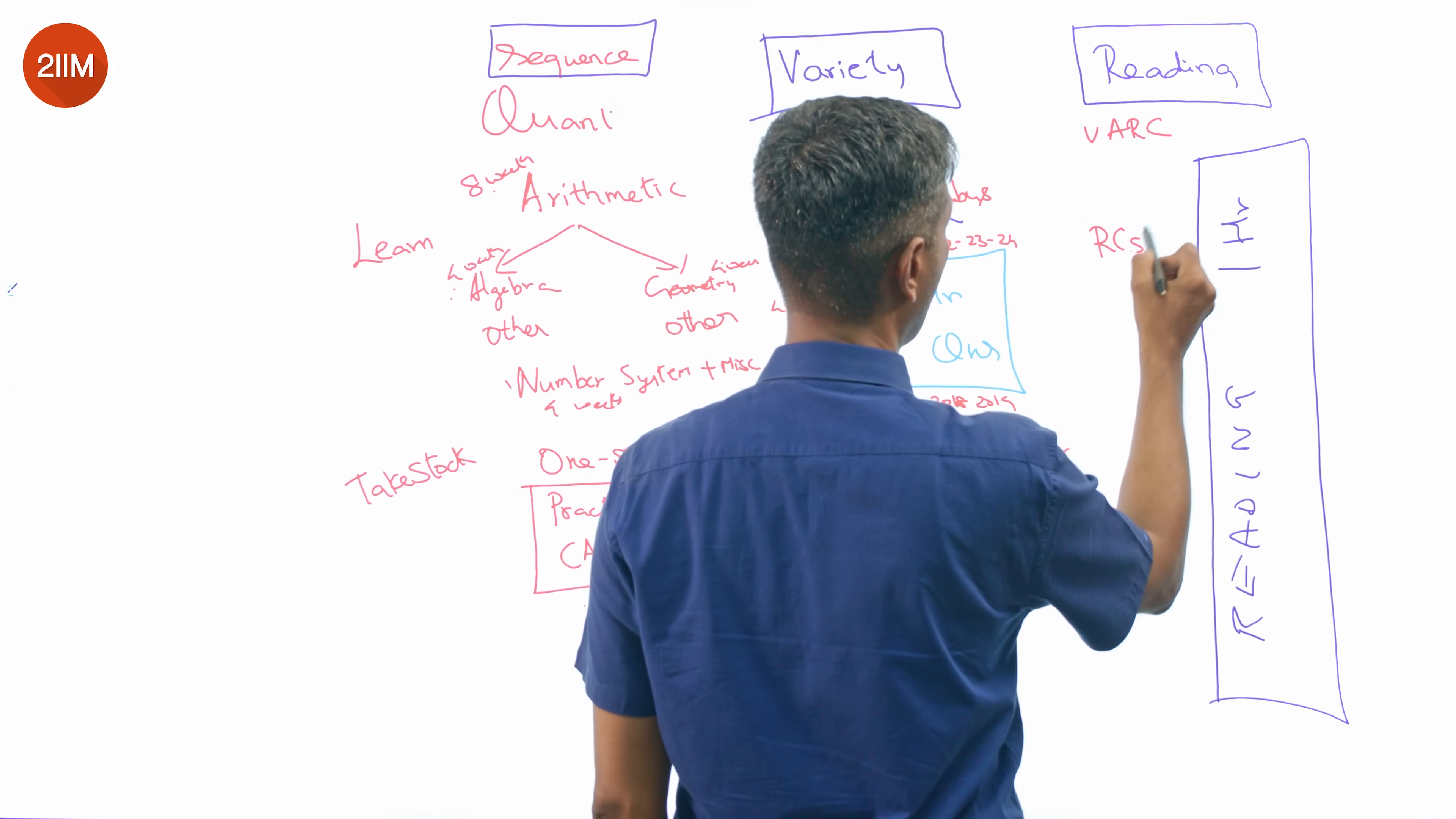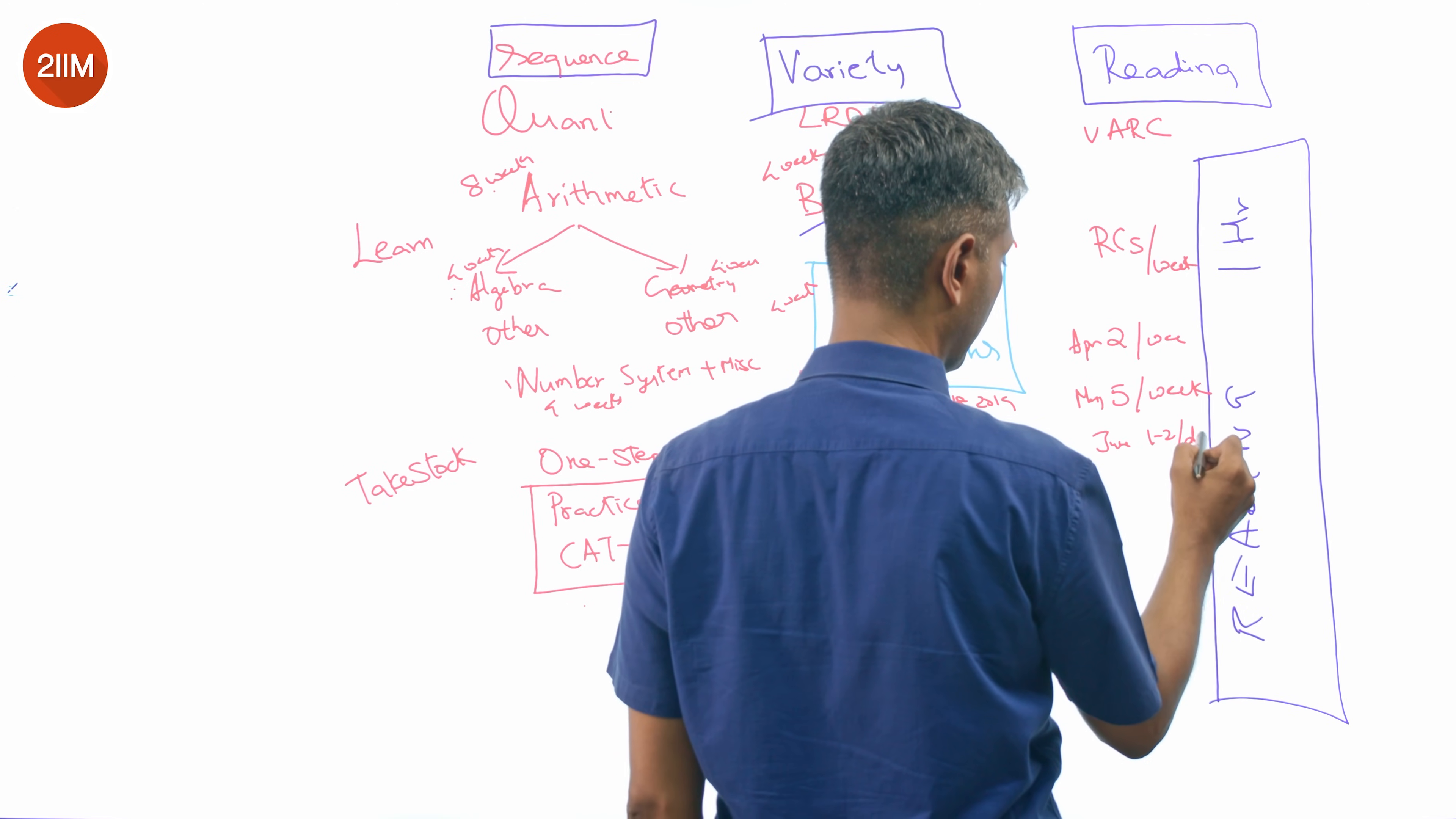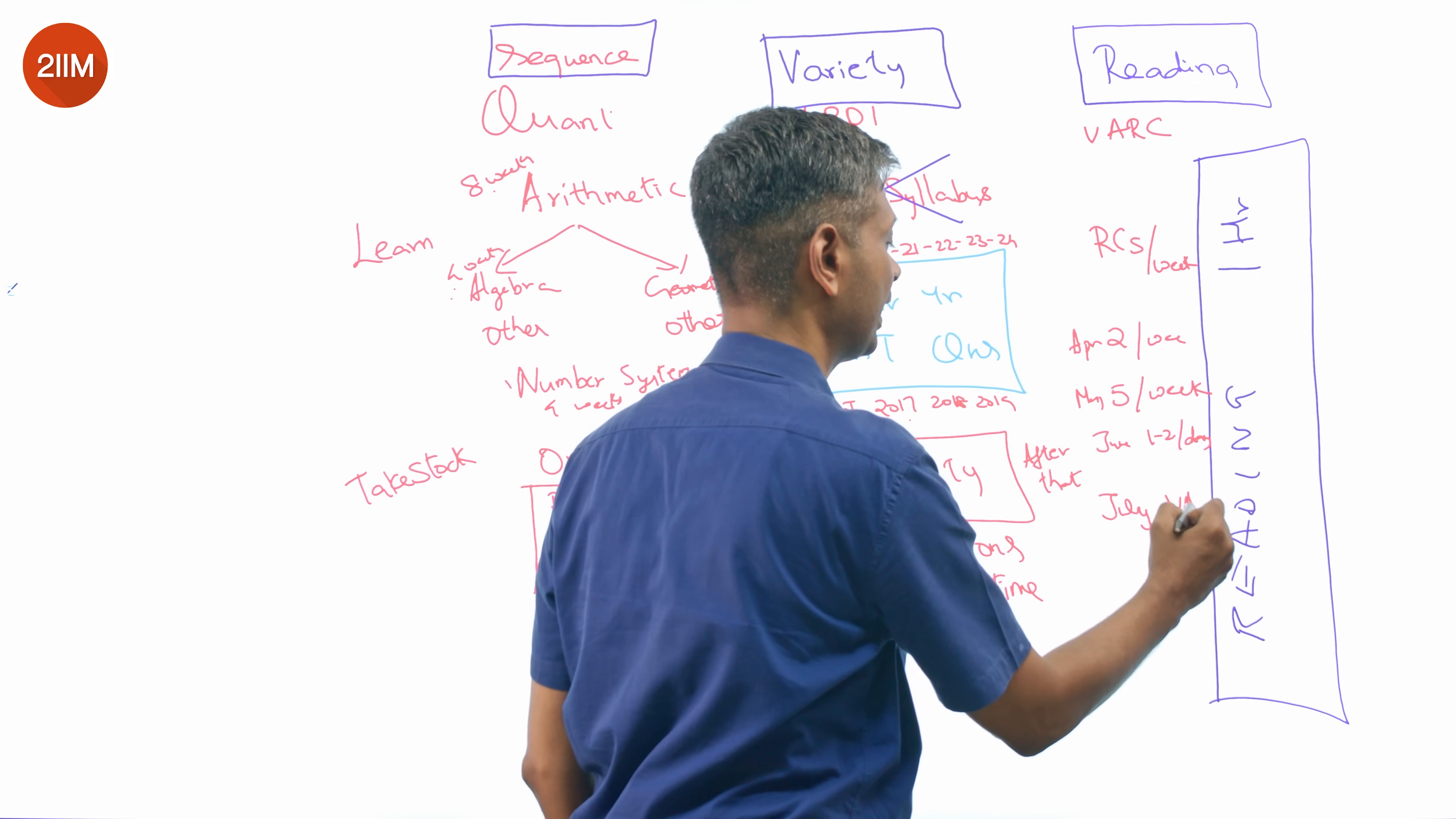How do you prepare for Verbal? It's about hitting some number of RCs per week. In April you probably start with two per week. In May you go to five per week, one per day. By the time you're in June you should be doing one to two per day apart from reading. Apart from reading for fun, apart from reading longer articles for hanging in there. After you've done this for April, May, June, by the time you're into July you push for the VA track as well.